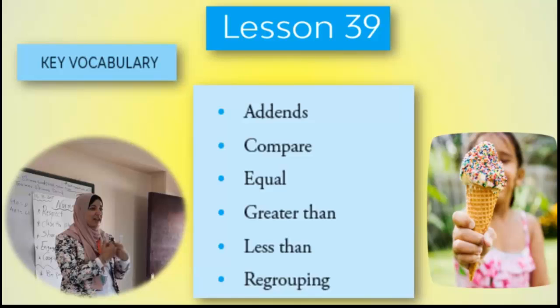الكي فوكابيلري دي بتعرضني للكلمات اللي المفروض أقولها للولاد في الكلاس، والمفروض إن الولاد يكونوا فاهمينها كويس جداً، عشان يكونوا عارفين هم بيعملوا إيه في عملية الجمع وفي النواتج. بيستخدموا المصطلح compare عشان بيقارنوا، addends يعني إضافة، equal يعني يساوي، greater than أكبر من، less than أصغر من. كل دي حاجات مهمة جداً، وأنا بشرح للولاد الاستراتيجيز والخطوات وهم بيعملوا regrouping — إعادة توزيع الأرقام والأعداد.